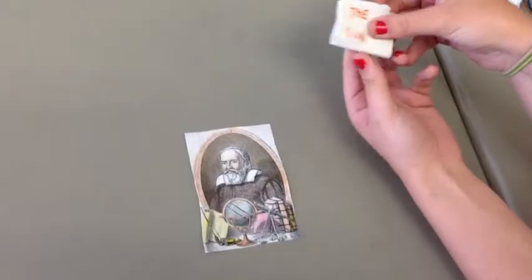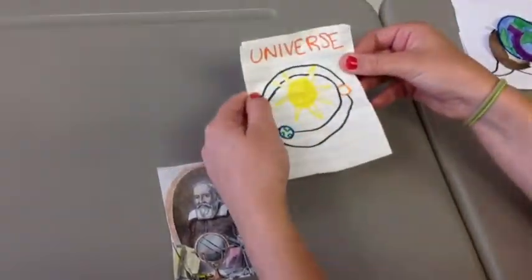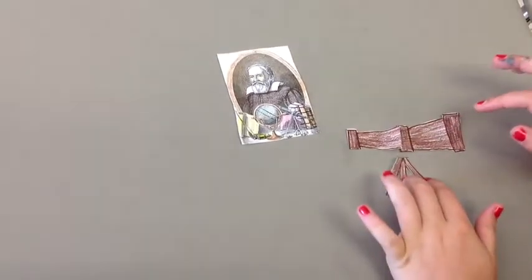Galileo was an astronomer who experimented on the ideas of Copernicus and Kepler. Galileo also assembled the first astronomical telescope.